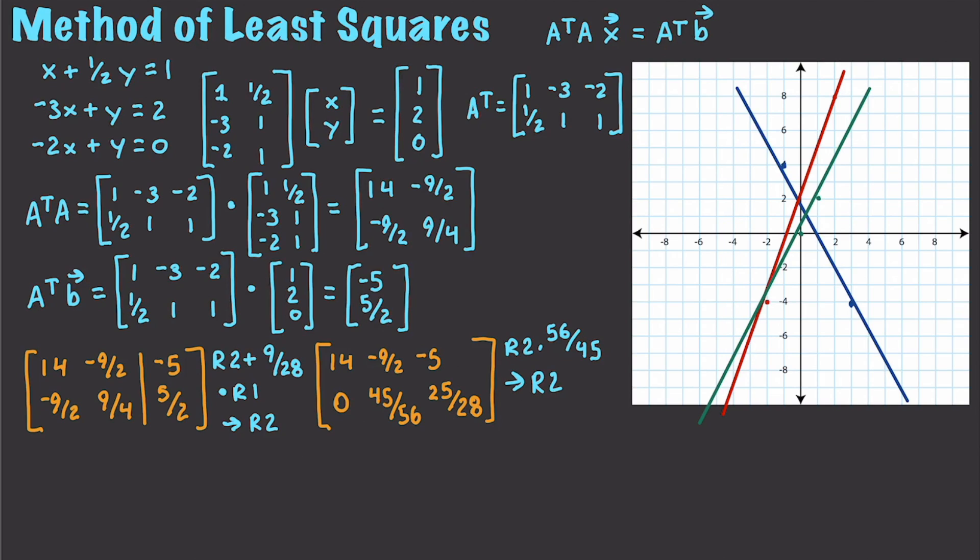I'm going to take R2 times 56 over 45 and put that result in R2. If I do that, I'm going to end up getting 14, negative 9 over 2, negative 5, 0, 1, 10 over 9. We can see we're getting an answer right here. And then I'm going to take R1 plus 9 over 2,